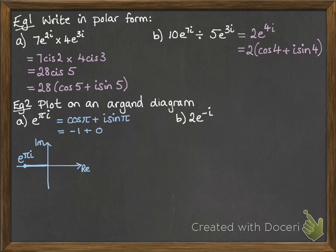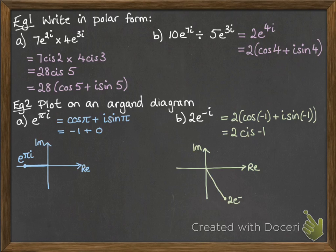And how about 2e to the minus i? Well, that would be 2cis minus 1. So that looks like this. We've got a line of length 2, and the argument is 1 in a negative direction away from the positive real axis.